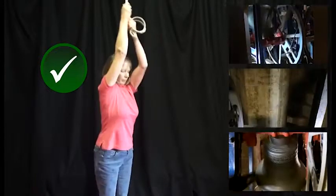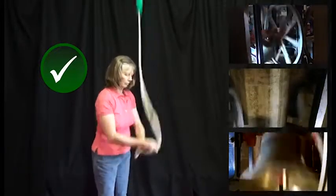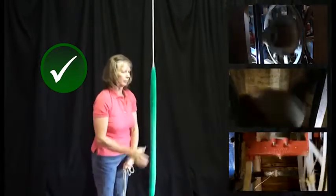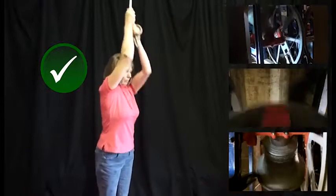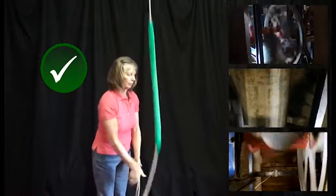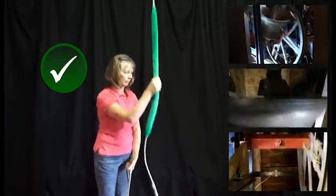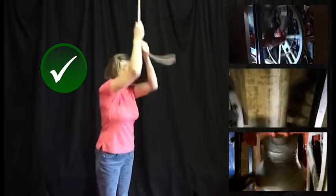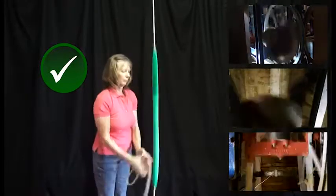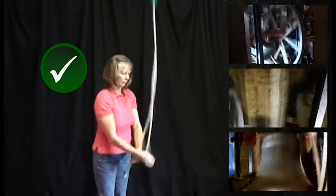Gradually after that, the bell swings through a wider and wider arc until it's up. When it's up, you'll see that the clapper connects with the bell at each stroke just before the top of the swing.